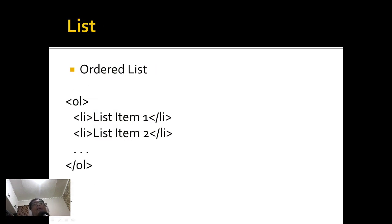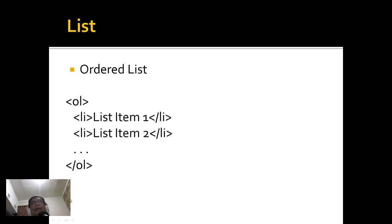To summarize what we've done: for images we use the img tag, for links we use the anchor tag, and for lists we use the ul tag and the ol tag. The ul tag is for unordered list and ol is for ordered list. Thank you very much.